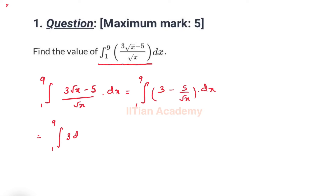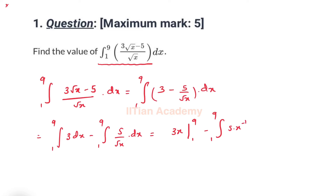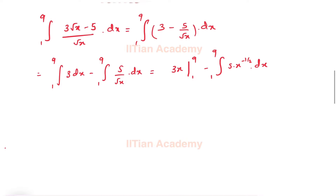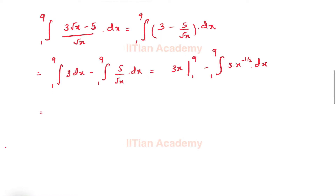We can further simplify it as: limits ranging from 1 to 9 of 3 dx, minus limits ranging from 1 to 9 of 5 by root x dx. The integration of 3 dx is 3x with limits from 1 to 9, and the second term is 5 into x raised to the power minus 1 by 2 into dx.